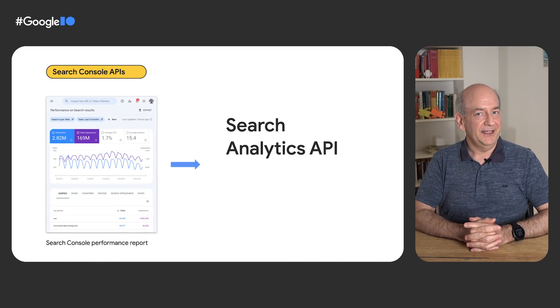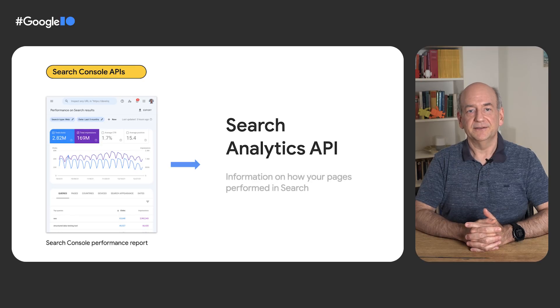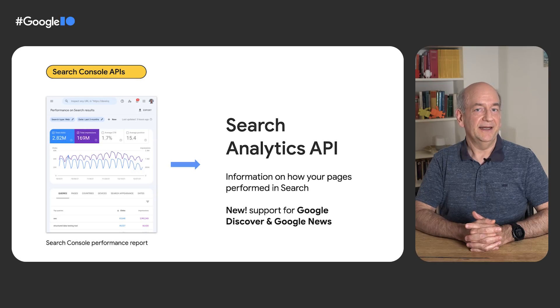Are you verified? All right, let's check out the new APIs. The first API on our list is the Search Analytics API. This maps to the performance report in Search Console and gives you information on how your pages performed in Search. New in this API is support for Google Discover and Google News. This is interesting for developers, since you can find creative ways to display and add value on top of the data. For example, while the Search Console interface shows only 1,000 rows, you could potentially show more or add a layer of advanced analysis and data visualization.